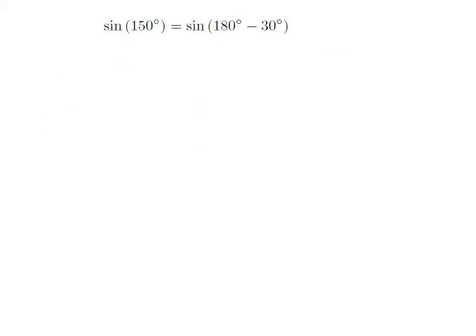As 150 degrees is equal to 180 degrees minus 30 degrees, so sine of 150 degrees is equal to sine of 180 degrees minus 30 degrees.